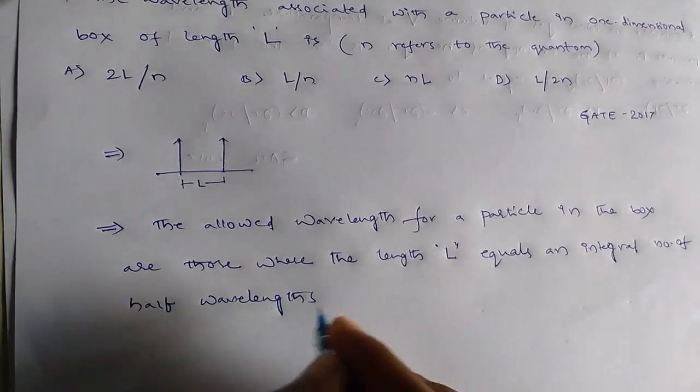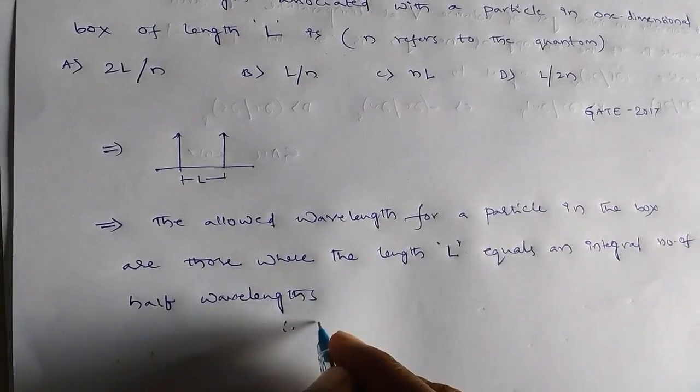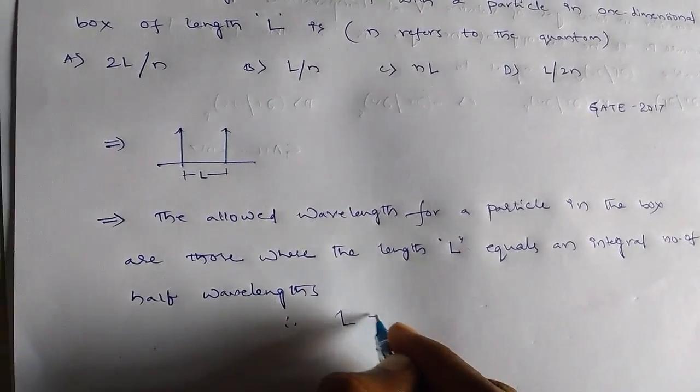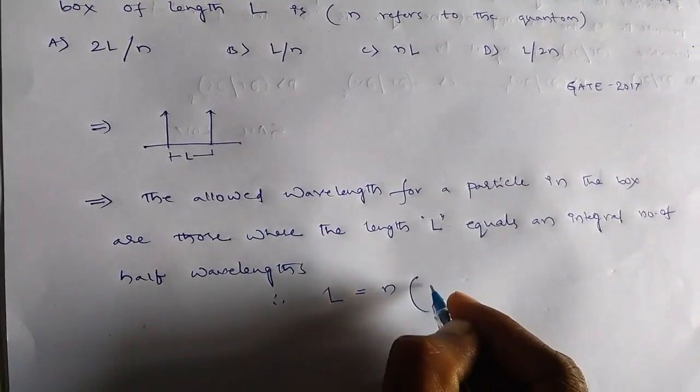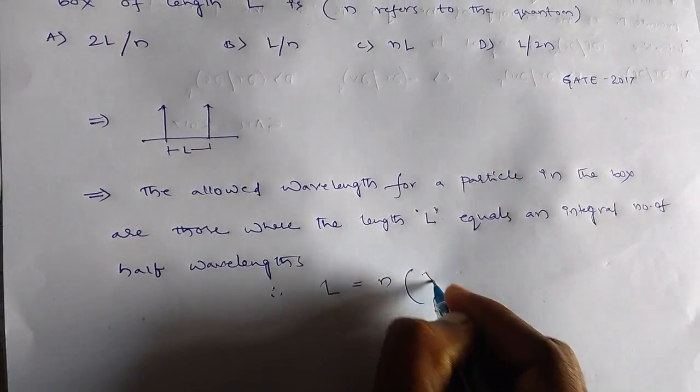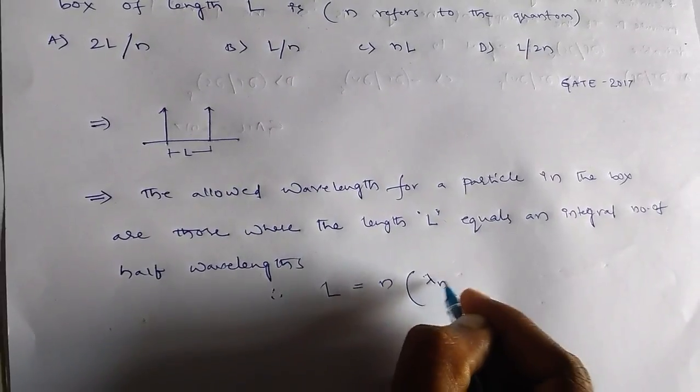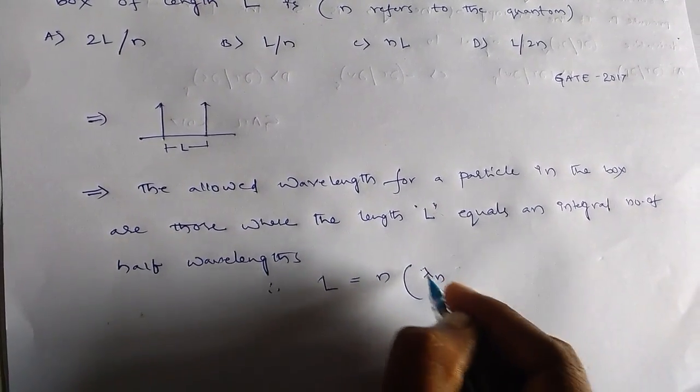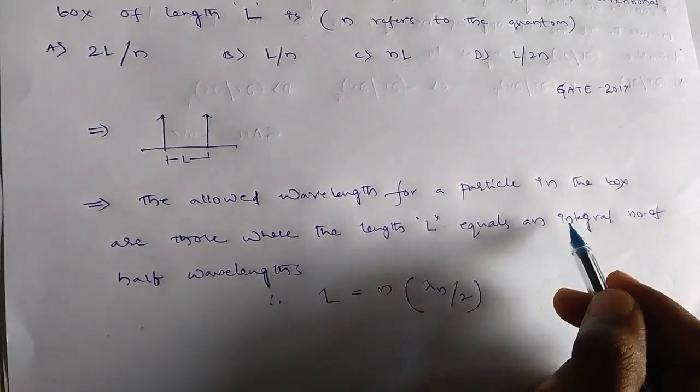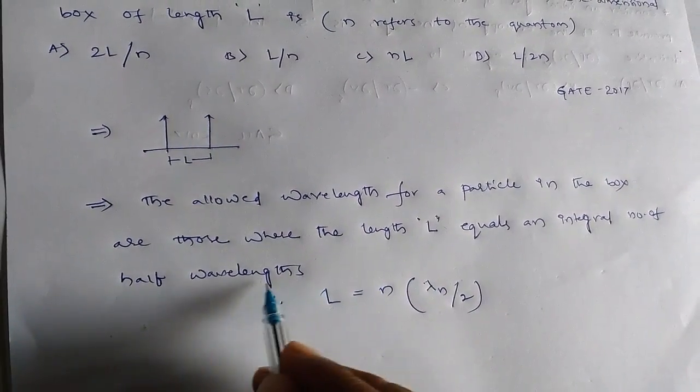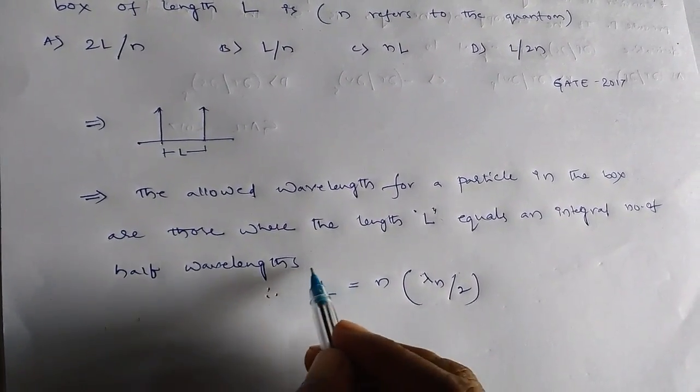So that means the length L equals to n, that is quantum number n, into lambda n by 2. So it equals an integral number of half wavelengths. So L is equal to n into lambda n by 2.